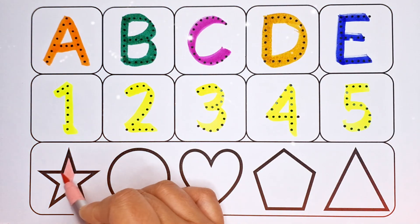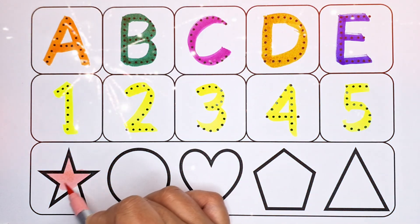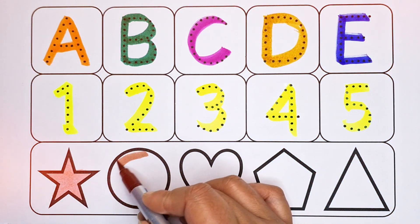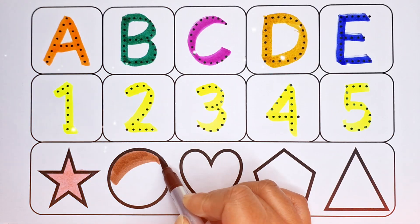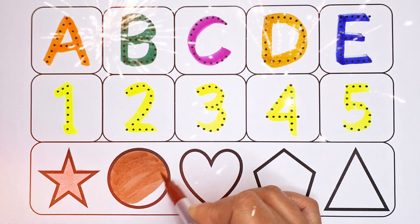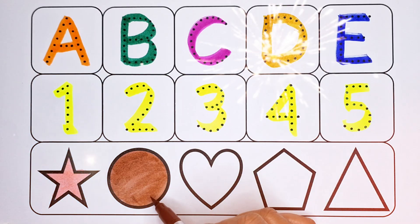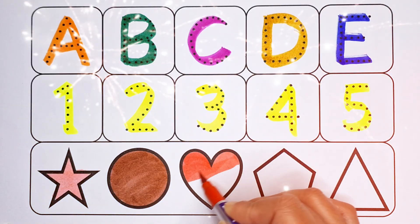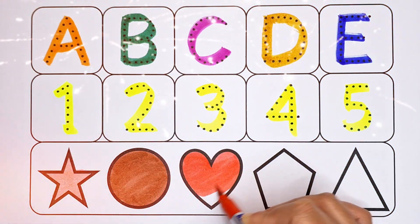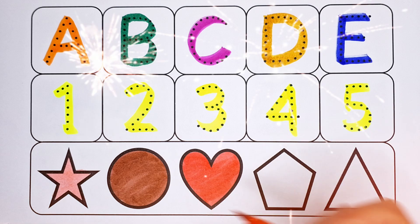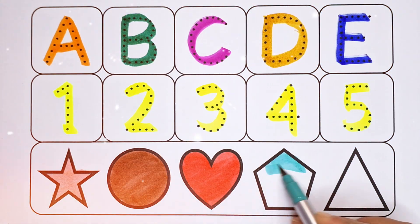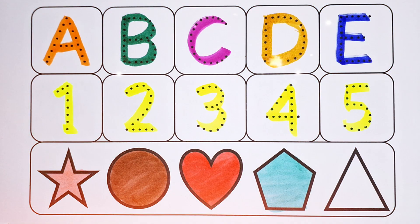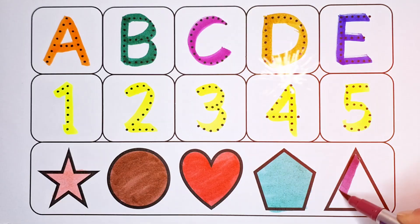Light pink color — star. Brown color — circle. Red color — heart. Light green color — pentagon. Dark pink color — triangle.